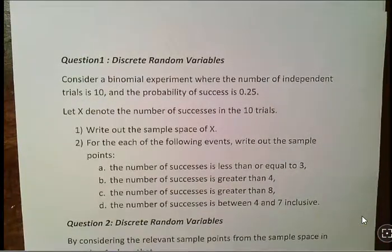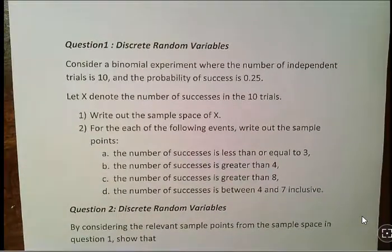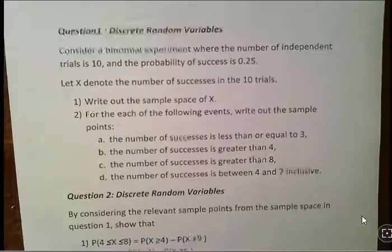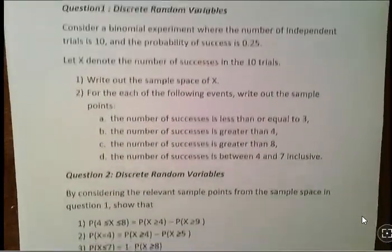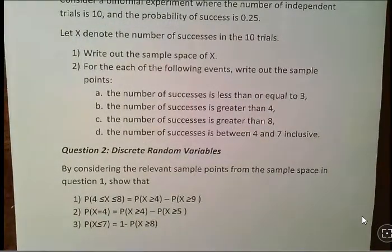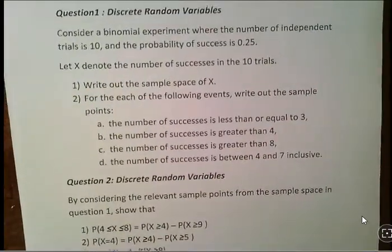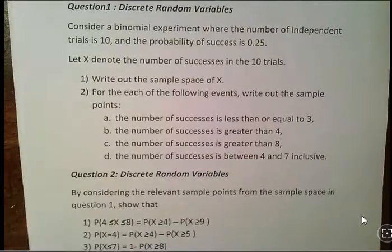Let X denote the number of successes in n trials. This is really about the sample spaces. Discrete random variables like the Poisson and the binomial can be a bit hard to crack until you really get the hang of the sample spaces. I'm going to adjust this paper here and write out the sample space first. I'll answer question 1 straight away.